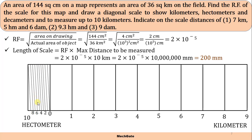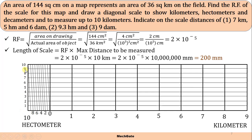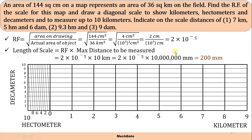Divide the height of the rectangle into 10 equal parts, numbered 1 to 10. The minimum distance measurable is 1 hectometer; dividing 1 hectometer into 10 equal parts gives a decameter as the tertiary unit. Below the scale, label the RF as 2 × 10⁻⁵. This completes the diagonal scale showing three units: kilometer, hectometer, and decameter.